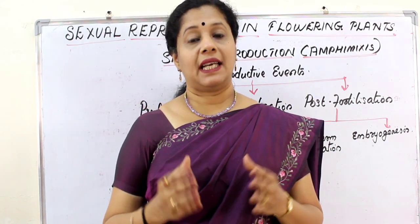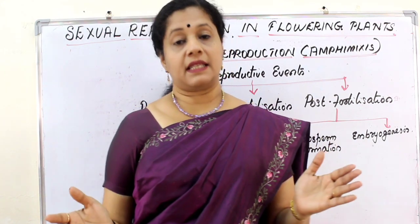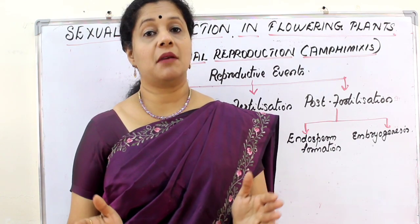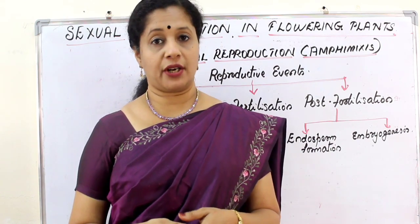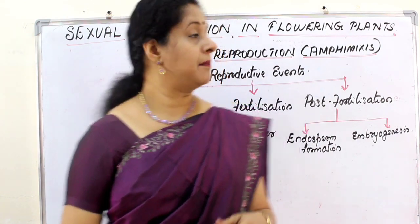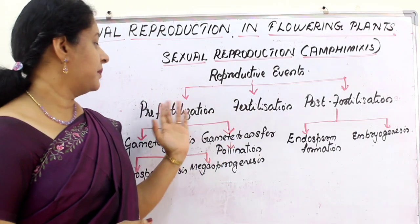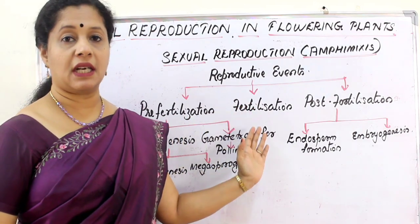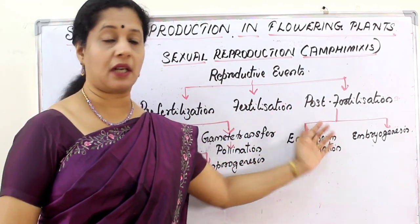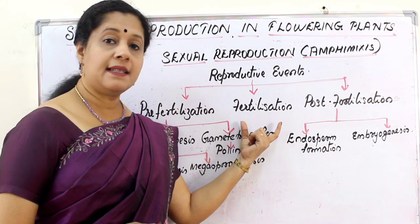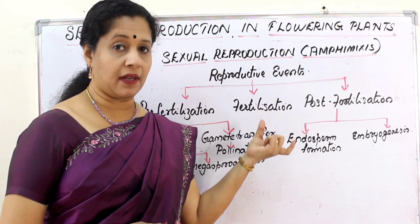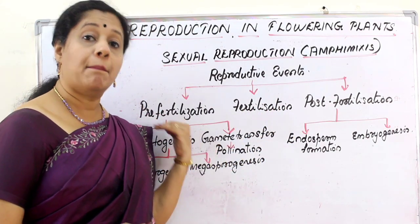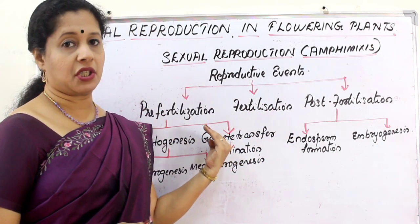We can categorize all the events taking place in sexual reproduction under three headings: pre-fertilization, fertilization, and post-fertilization. Fertilization is the main event, but what is happening before that is pre-fertilization.